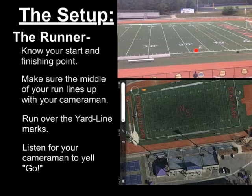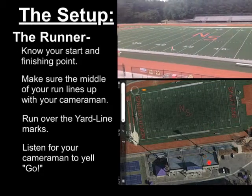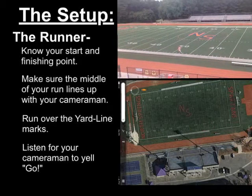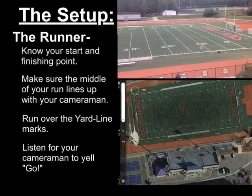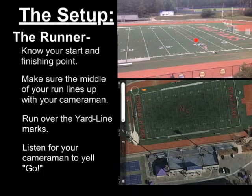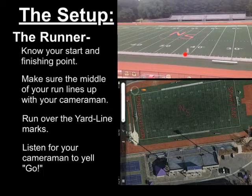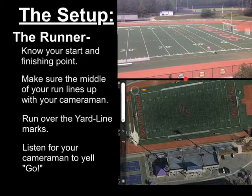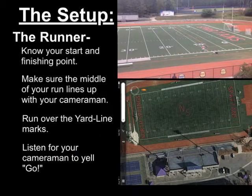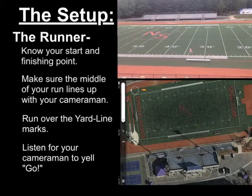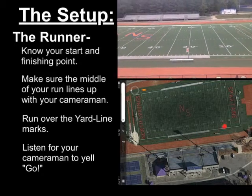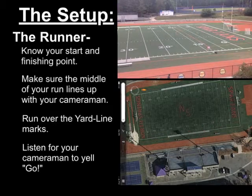Make sure that they are lined up with the cameraman. If the cameraman is here at the 30, that's halfway between 10 and 50. You need to run over the yard line marks. The runner is running over these yard line marks so that way it's easy to tell where he is and when he is. And then also, listen for the cameraman to yell go. Because the last thing you want to have to do is to do it over again because you didn't coordinate the time with your cameraman. You have to get that first time when he starts all the way through to the last time when he finishes.